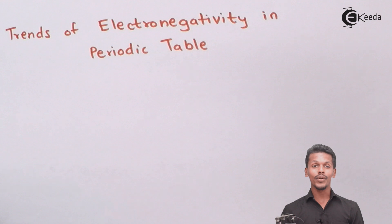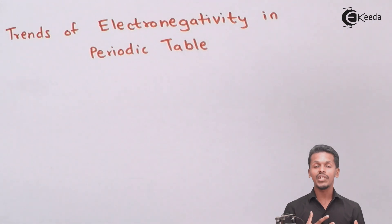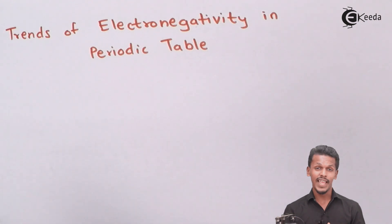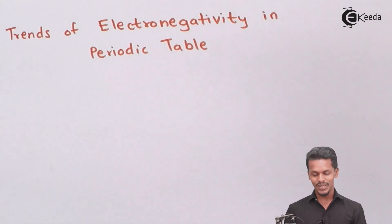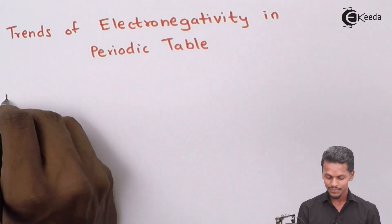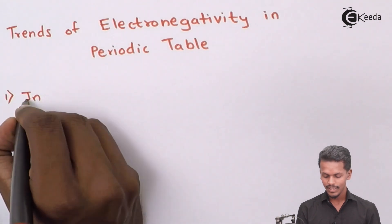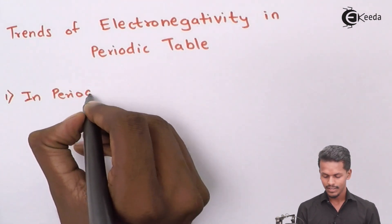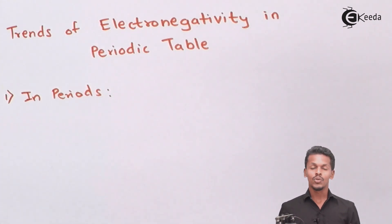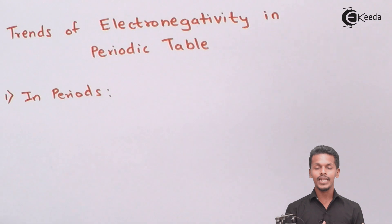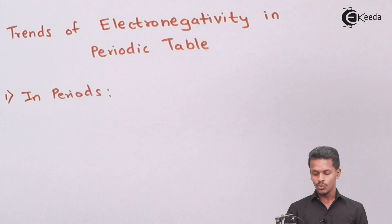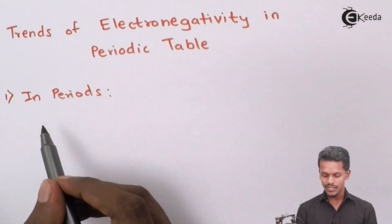We are going to talk about the trends in electronegativity in the periodic table — that is, the variations in electronegativity for elements in the periodic table. Let us start with the first trend: variations in electronegativity in periods.